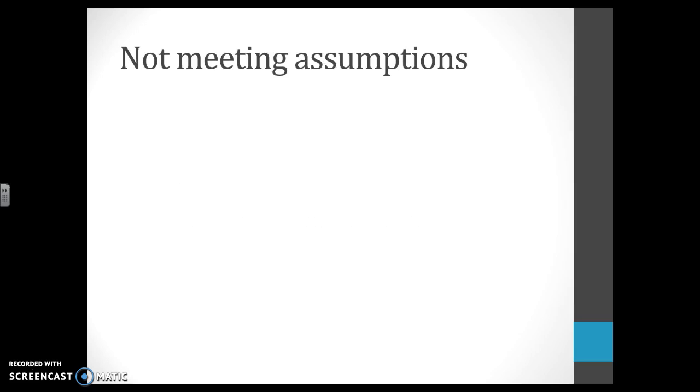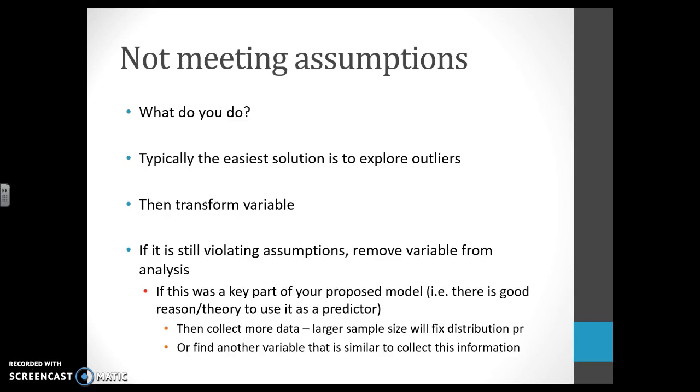If you are not meeting assumptions, that is the first thing that you have to test and we have to fix it. Probably if we get rid of outliers, it will fix the problem. Otherwise, we're going to transform the variable and we cannot move on until we meet assumptions. If we are still violating, then we have to remove that entire variable from the analysis.